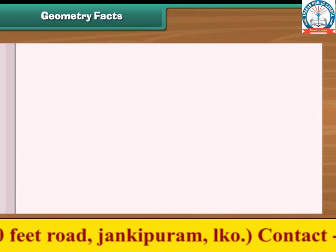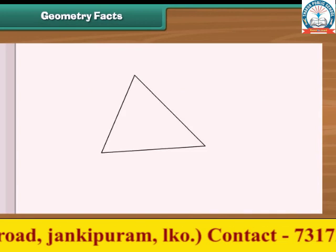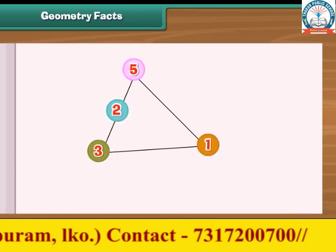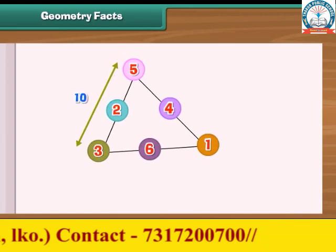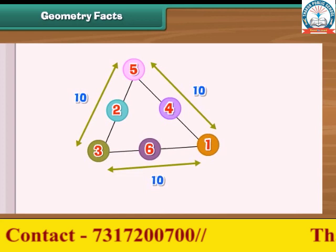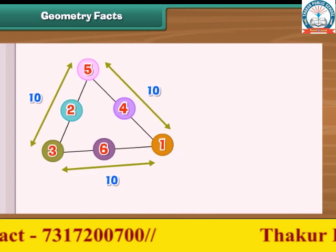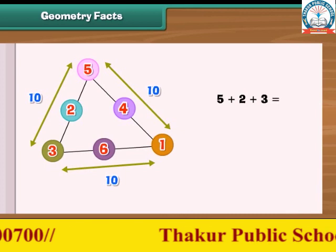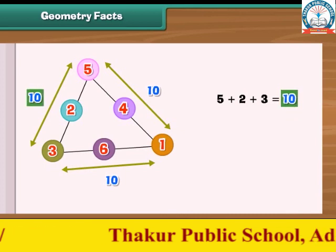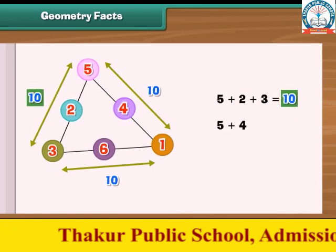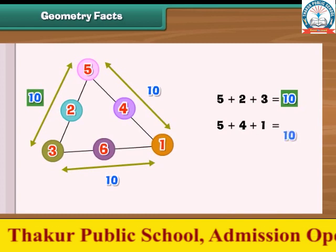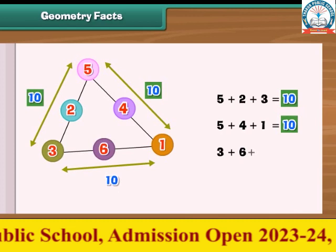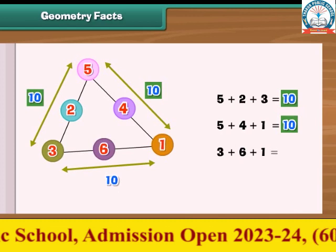Geometry facts. Look at this magic triangle. The sum of numbers on each side of the triangle is 10. Let us verify: 5 plus 2 plus 3 is equal to 10; 5 plus 4 plus 1 is equal to 10; 3 plus 6 plus 1 is equal to 10.